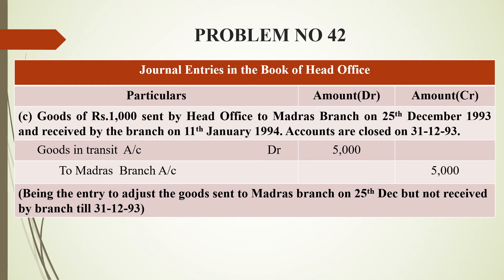Since accounts are closed on 31st December, the head office has dispatched the goods but Madras branch has not yet received them — they were received on 11th January 1994. So the entry in the head office books is: goods in transit account debit, to Madras branch account credit.